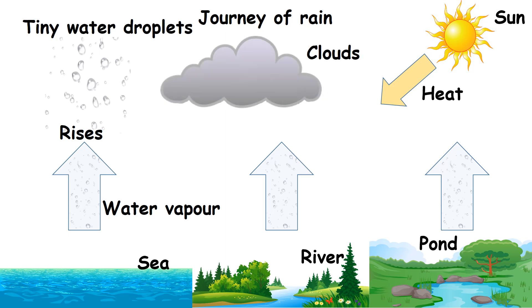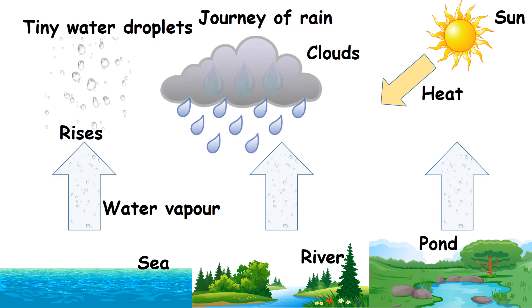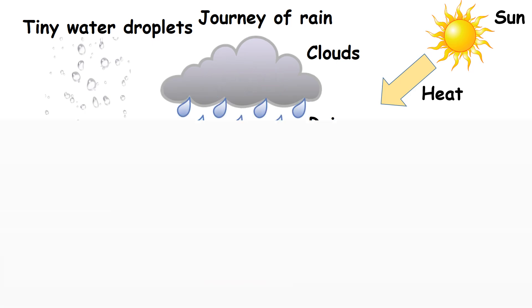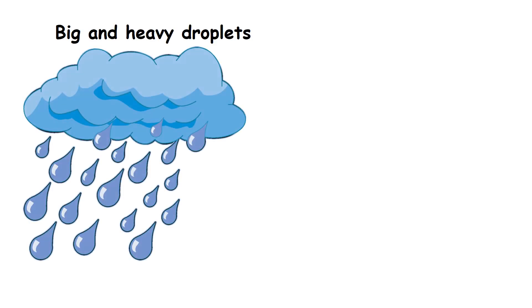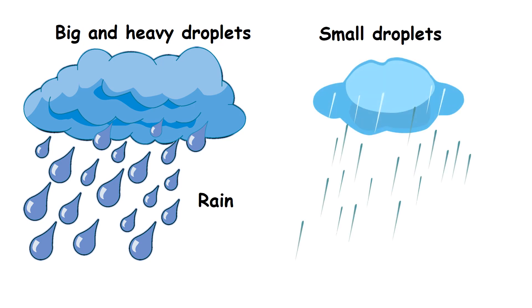The water droplets in the clouds join together to form bigger droplets. When they get too heavy, they fall as rain. Big and heavy droplets falling to the ground are called rain and small droplets are called drizzle.